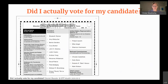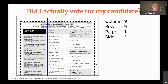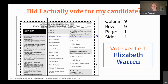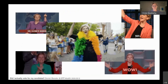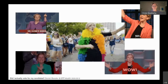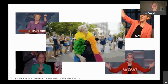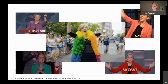Now I had to figure out who that selection actually was on the absentee ballot. You can go to the Travis County website and download your sample ballot before the election. So doing the coordinates — column 9, row 9, page 1, side 1 — column 9 was the selection rows for all the bubbles, and row 9 was Elizabeth Warren as a selection. I actually manually verified that I voted for Elizabeth Warren from the barcodes on the absentee ballot. This was a huge moment — I actually accomplished it and notated everything down.